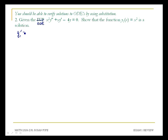y1 prime is going to be the derivative of x squared. That gives you 2x. And y1 double prime is going to be the derivative of 2x, which is 2.